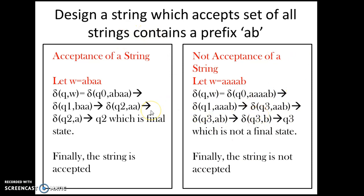Acceptance means the string starts with A followed by B, and after that any number of a's and b's. Non-acceptance means anything other than starting with A then B — for example, strings starting with AA, BA, or BB. If your string is accepted by AB followed by many a's and b's, you are in an acceptance state.